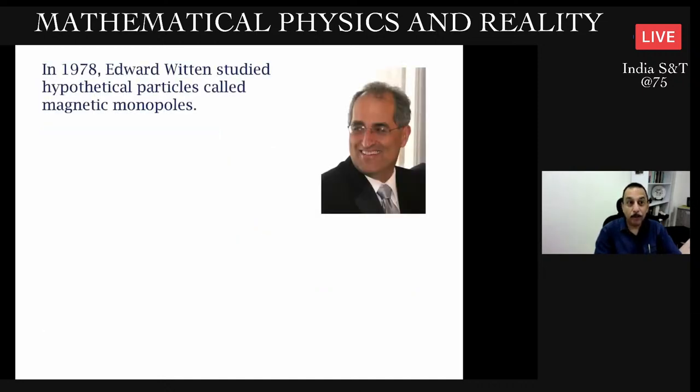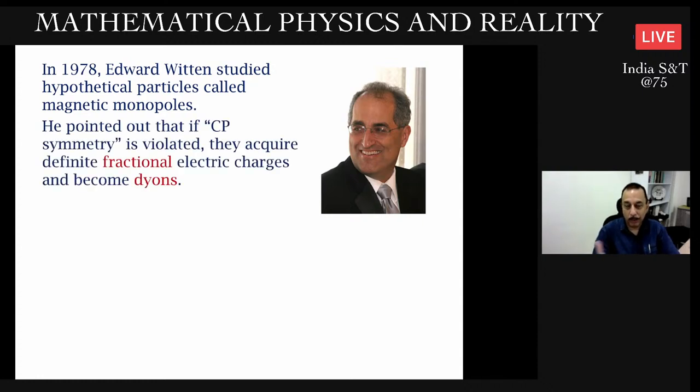Let me jump to 1978. Edward Witten, a leading mathematical physicist who has the Fields Medal, studied hypothetical particles called magnetic monopoles. Witten studied them afresh. This is not a totally fashionable subject because all evidence is that such objects don't exist. Magnetic monopoles are hypothetical particles that have only a north pole or only a south pole of magnetic charge and not the other pole. Such a thing is not seen in nature.